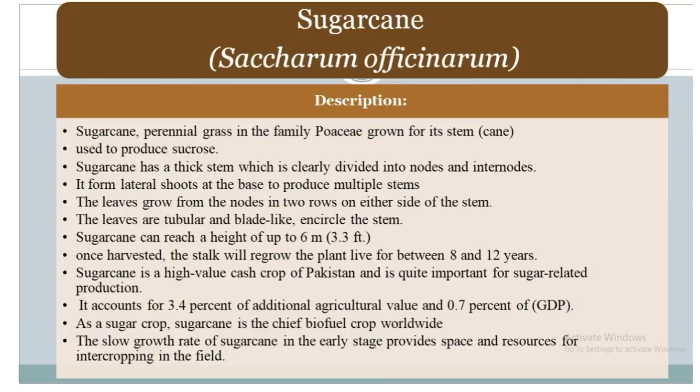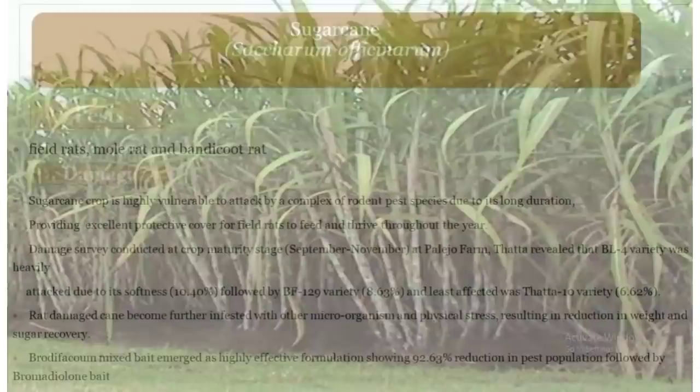Vertebrate pests of sugarcane include fire rats, moles, wreath rats, and bandicoot rats.